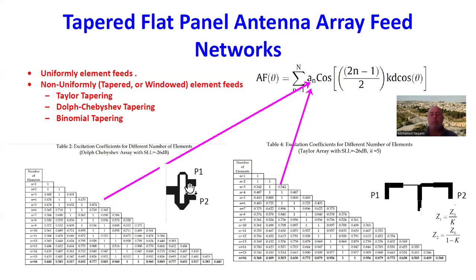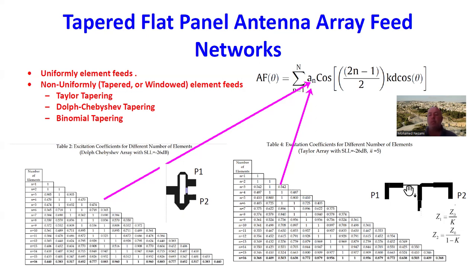To control the tapering coefficients and implement the power distribution, we use either unequal Wilkinson power dividers — where the output ports have unequal power — or T-junctions. The ratio of power from input to output determines the characteristic impedance of the lines at the junction, and that is how we implement this.